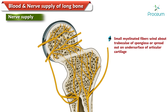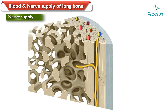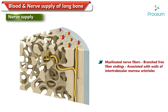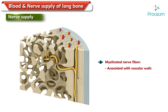Small myelinated fibers wind about the trabeculae of the spongiosa or spread out on the undersurface of the articular cartilage. Small knob-like terminations of nerve endings terminate in close relationship to the endosteum. Other myelinated nerve fibers have branched free fiber endings associated with the walls of intertrabecular marrow arterioles. Myelinated nerve fibers are usually associated with vascular walls but may also be associated with the connective tissue of the intertrabecular fat or marrow.